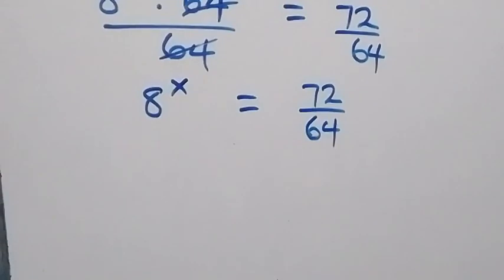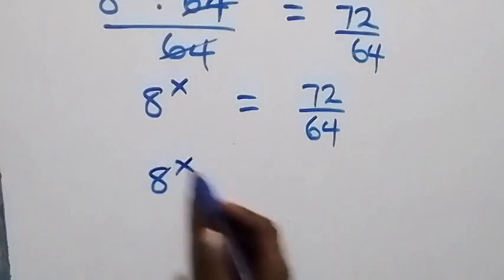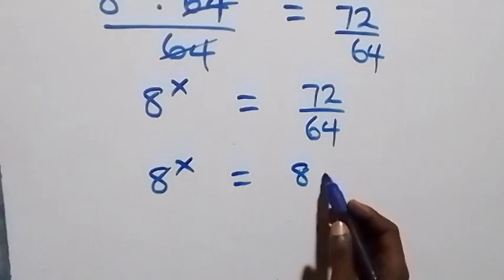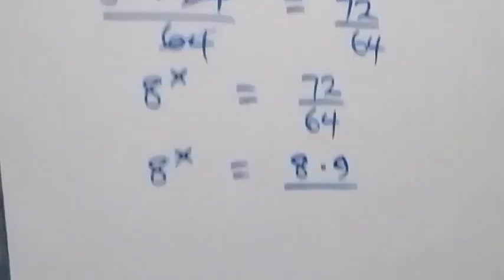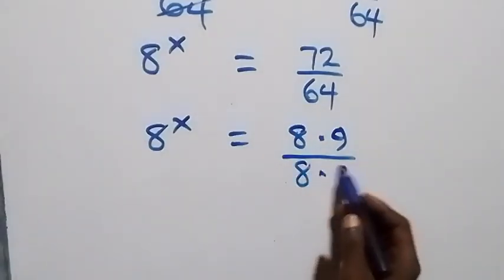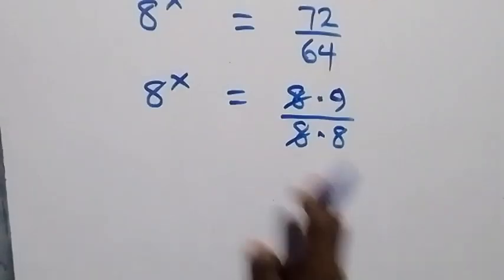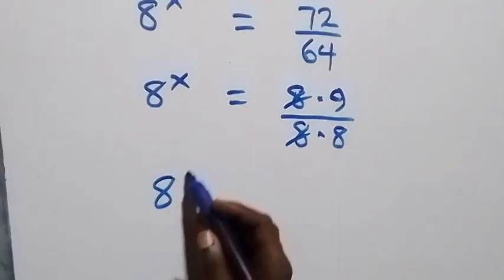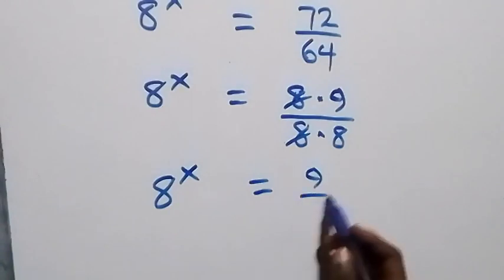From here, 72 over 64 — we can write that as 8 times 9 over 8 times 8. The 8s cancel each other, so what we have becomes 8 raised to power x equals 9 over 8.